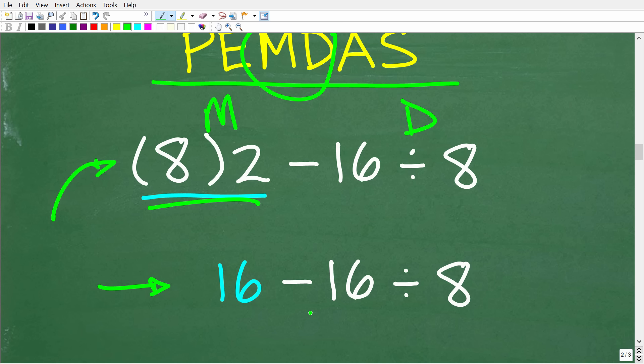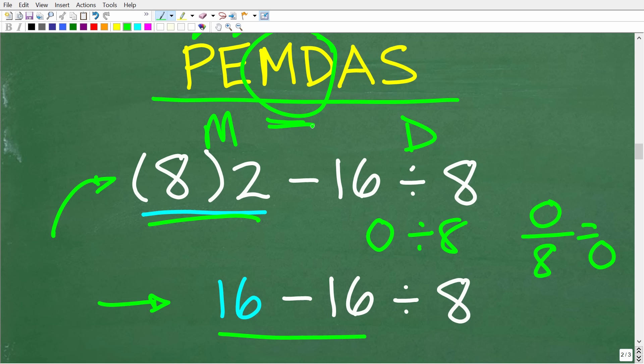So you can see how easy it is to make a mistake because someone, if they didn't know the correct order of operations, may decide, well, you know, 16 minus 16. I know what that is. That's zero divided by eight or zero divided by eight, which, of course, the answer here would be zero. But this is wrong because we don't do subtraction before any multiplication or division. So our last step or second to last step is going to be 16 divided by eight.